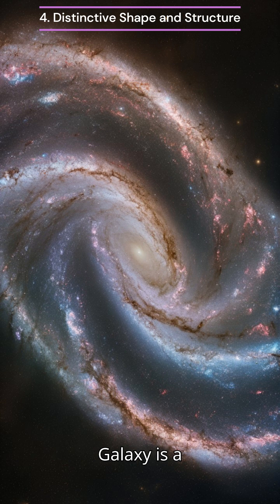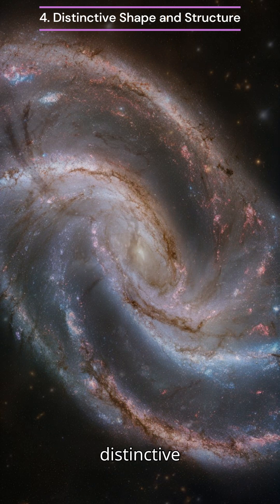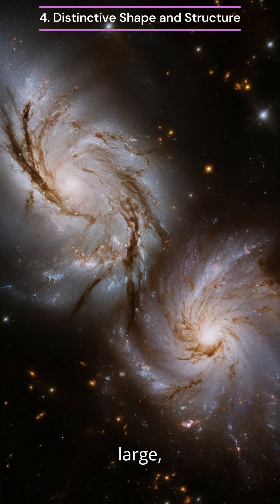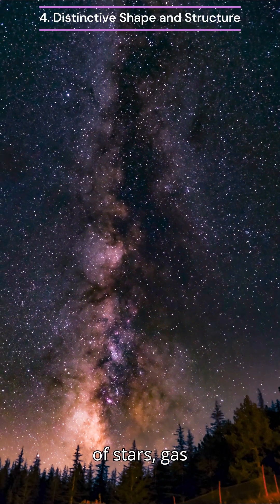The Andromeda Galaxy is a spiral galaxy with a distinctive shape and structure, featuring a bright central bulge and a large, sweeping disk of stars, gas, and dust.